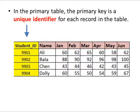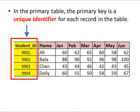In the primary table, the primary key is a unique identifier for each record in a table. In this case, the unique identifier is the student ID, because each student ID for each record is unique, represented by the different student IDs 9901 to 9904.